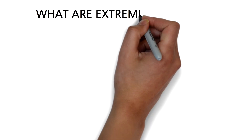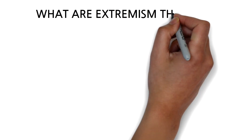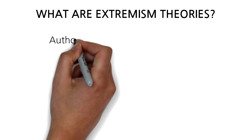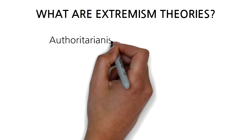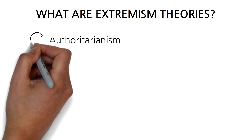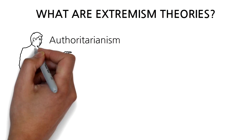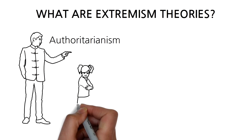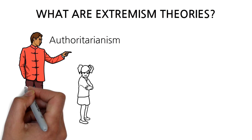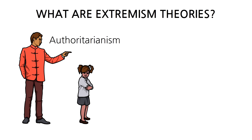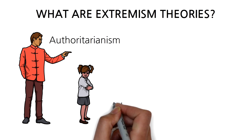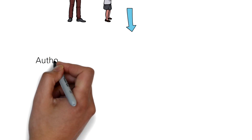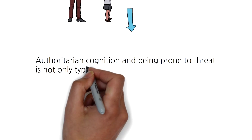Hi everyone, welcome back to another video. Today we're going to be looking at extremism theories. Before we get into the video, I just want to start with the definition of authoritarianism. Authoritarianism can be seen as strict obedience to authority at the expense of personal freedom, and we'll be referring to this throughout.